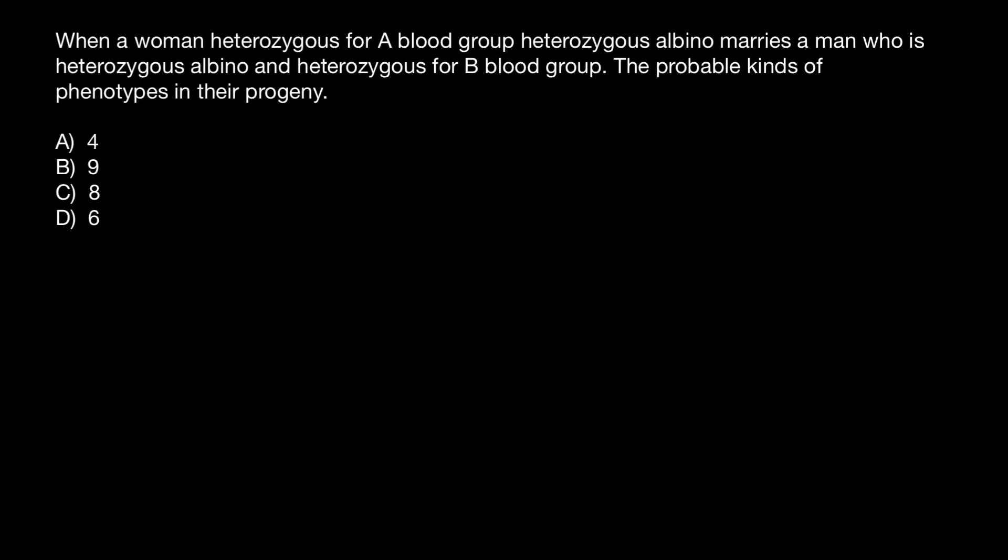Hello and welcome to Nikolai's genetics lessons. Today's question I got from one of my subscribers. When a woman heterozygous for A blood group, heterozygous for albino marries a man who is heterozygous for albino and heterozygous for B blood group, the probable kinds of phenotypes in their progeny equals. You have to choose the correct answer.